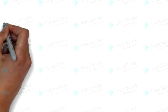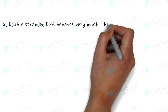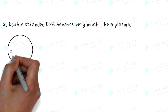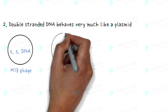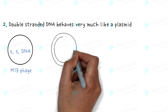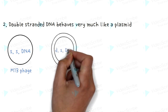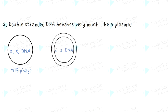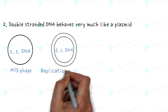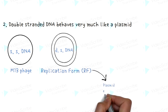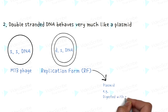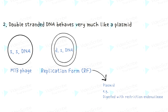Secondly, the double-stranded DNA form behaves very much like a plasmid. M13 phage is single-stranded, but when injected into E. coli, its replication form is double-stranded. This replication form, or RF, behaves very much like a plasmid. For instance, RF can be digested with restriction endonuclease, and then the insert can be cloned in.